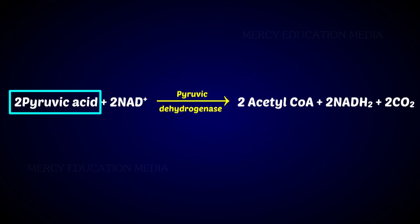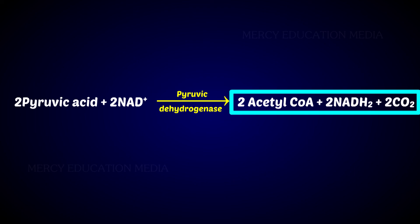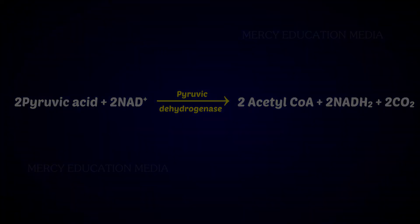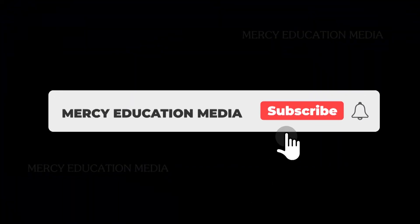Two molecules of pyruvic acid plus 2 NAD+, in the presence of pyruvic dehydrogenase, form two molecules of acetyl-coenzyme A plus 2 NADH2 plus carbon dioxide.